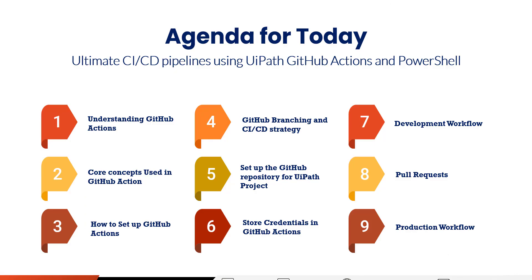Let's quickly look at the agenda for today. First, we will understand GitHub Actions and its core concepts. We will navigate through different settings required for creating a CI/CD pipeline and set up GitHub Actions for UiPath Orchestrator connectivity. We will discuss GitHub branching and CI/CD strategy — using a multi-branch setup for better security and delivery. We will set up a GitHub repository for a UiPath project, store credentials such as client ID, orchestrator secrets, and orchestrator URL. We will discuss the development workflow, which will build, publish, and test the package and create a pull request. Finally, we will discuss how the production workflow can be triggered.